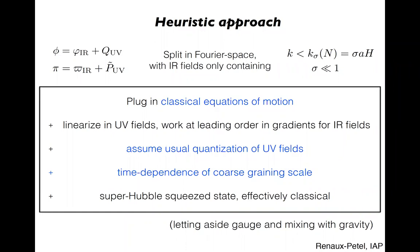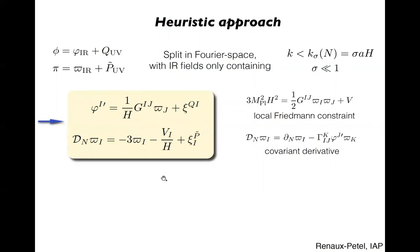Let me now briefly describe the heuristic approach to the problem. I only sketch it, as I will show next a more rigorous path integral derivation that solves the conceptual issues of this historical approach. The basic idea is that you split the fields and momenta into infrared and UV parts, keeping in the infrared only the comoving momenta less than the time-dependent coarse-graining scale k_σ = σaH, where σ is a small parameter. You plug this into the classical equation of motion for the full fields, you linearize in the UV fields, but keep all non-linearities in the infrared sector at leading order in a gradient expansion. You further assume that the UV fields behave as in standard perturbation theory, and crucially, you take into account the time dependence of the coarse-graining scale.